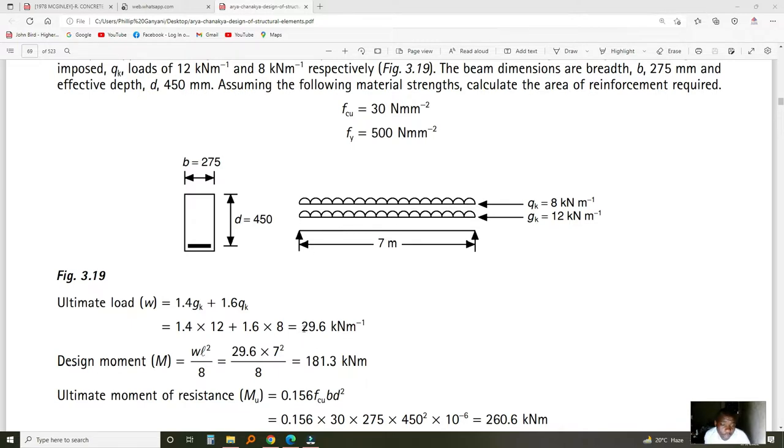In this case, 29.6 multiplied by the length of the beam squared divided by 8. This is for a simply supported beam. When we multiply, we come up with this moment of 181.3 kNm. We're going to design a beam to carry a moment of this size.